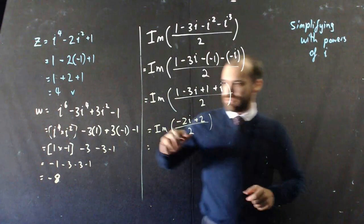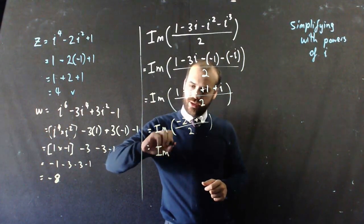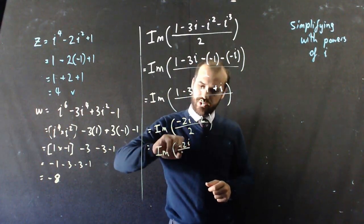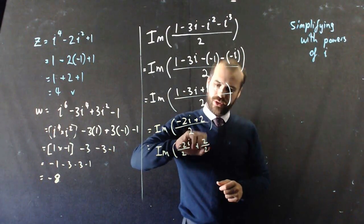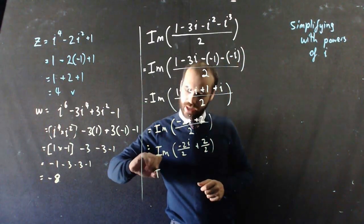I can divide the components by 2, so it's imaginary negative 2i over 2 plus 2 over 2. Imaginary.